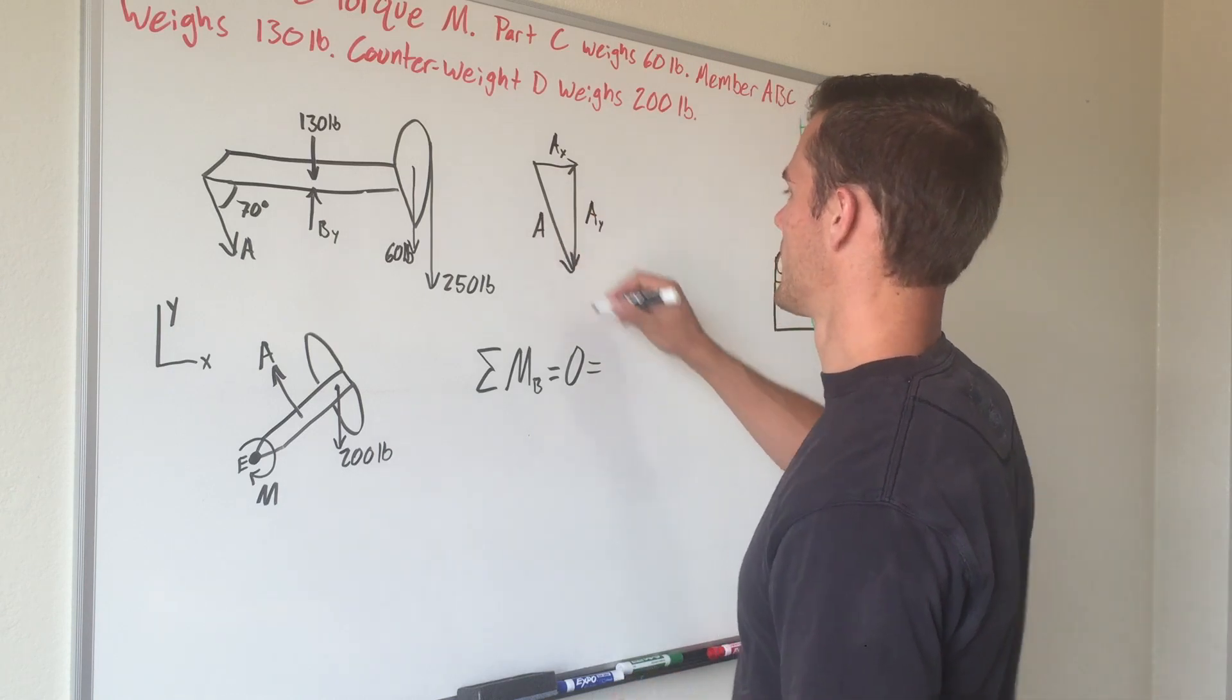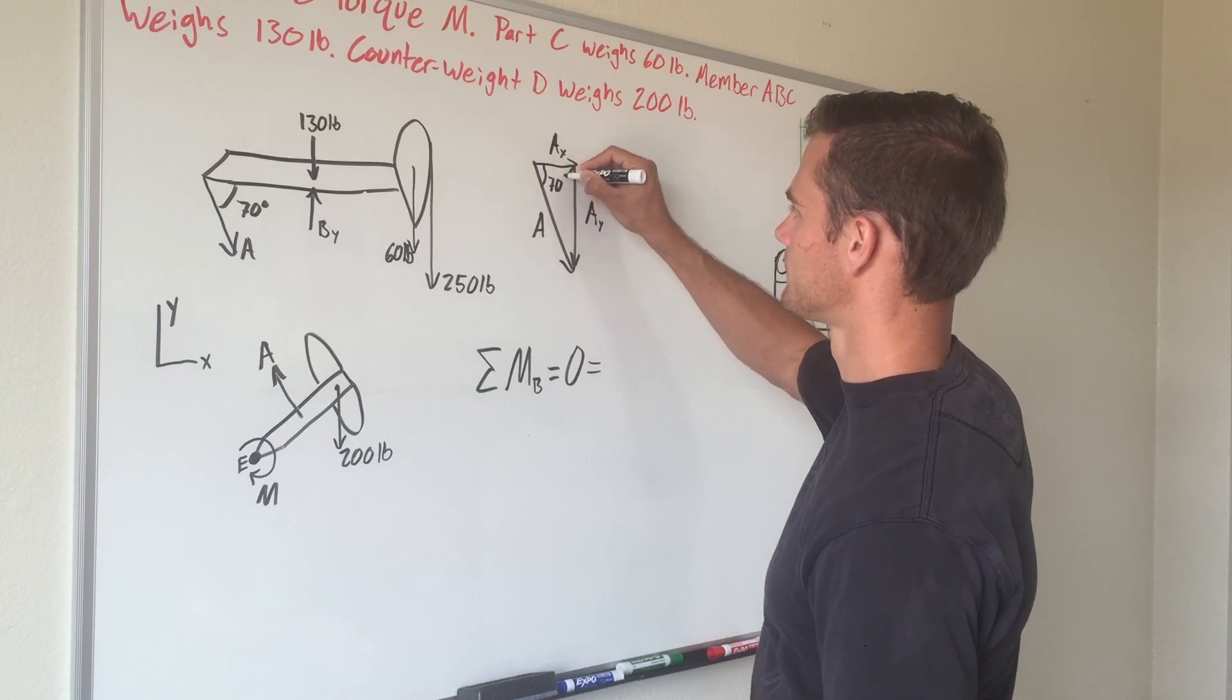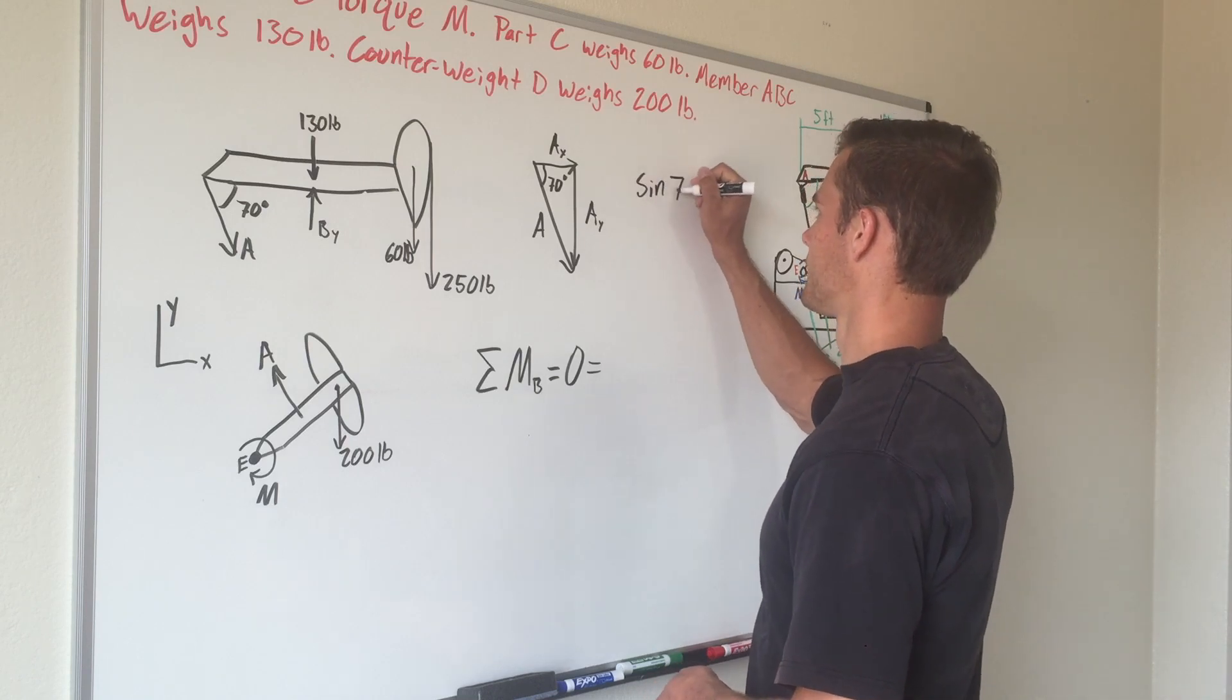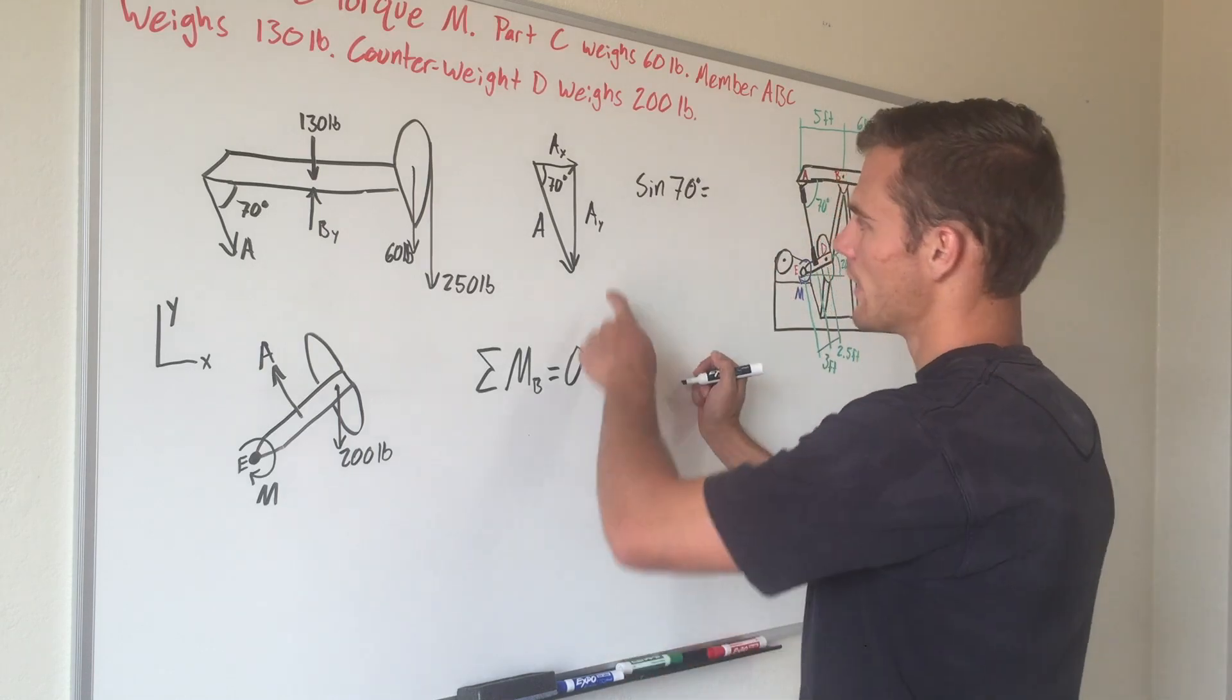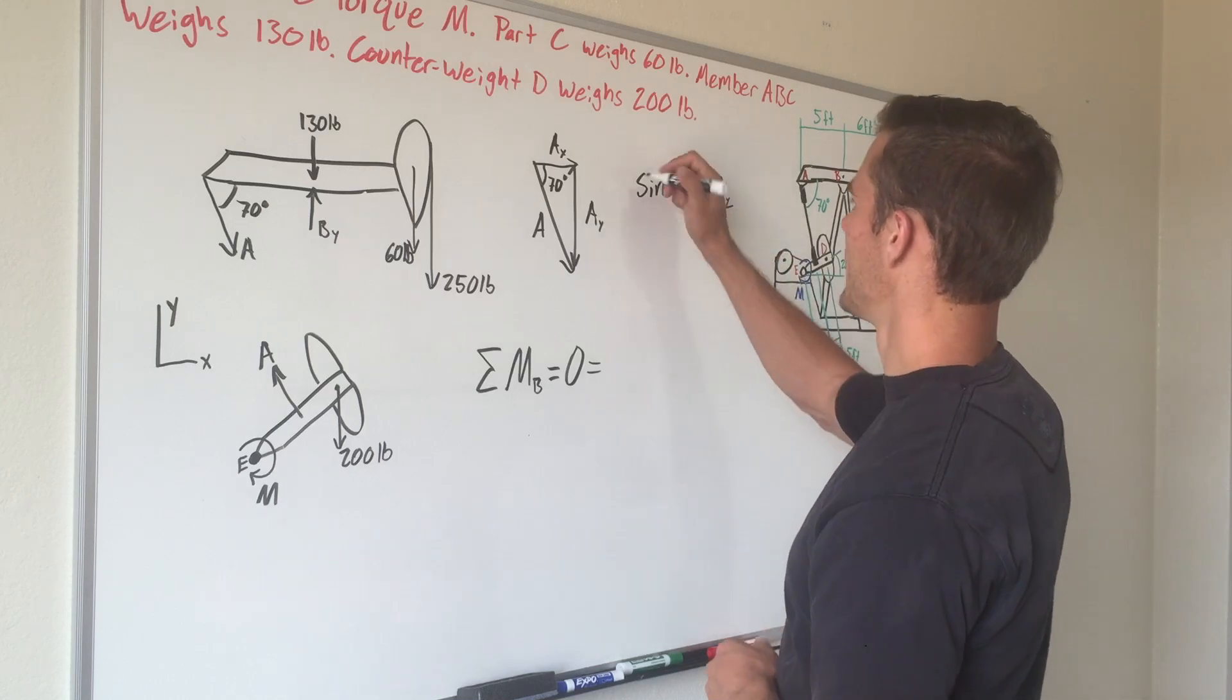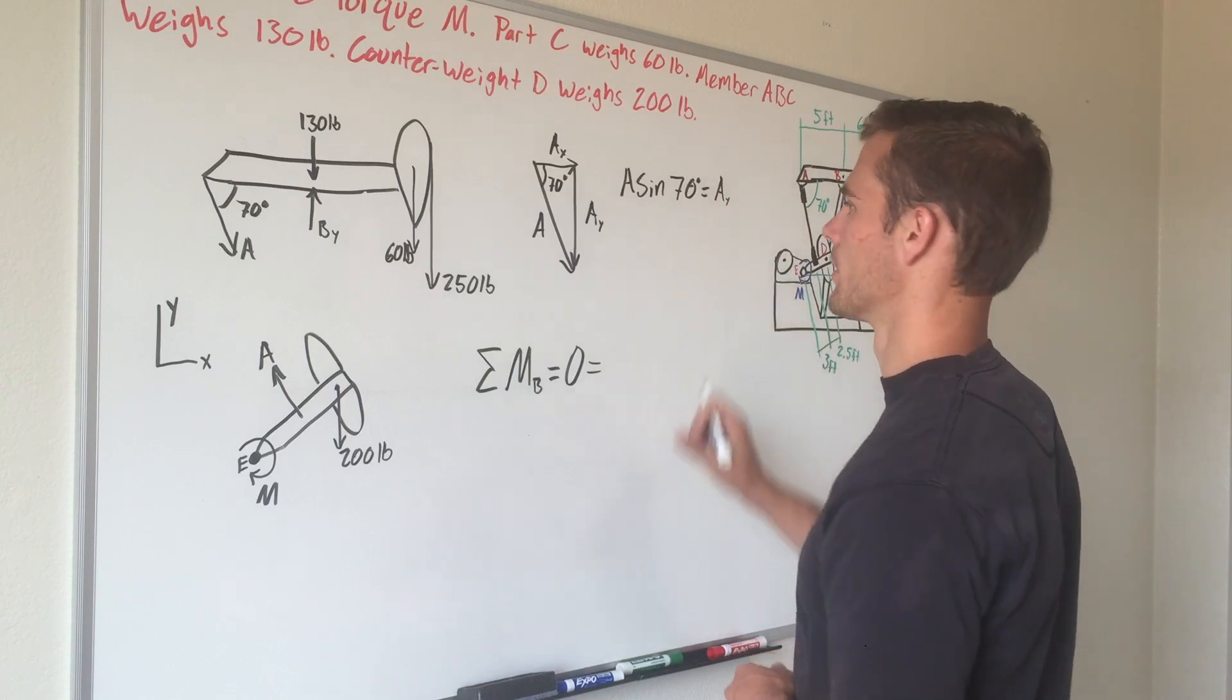We have our triangle here and we know this is 70 degrees. The sine of 70 degrees equals the opposite over the adjacent side, so A_y divided by A. If we multiply A over, that equals the y component, which is perpendicular to our moment arm.